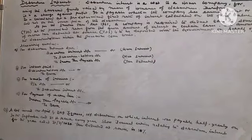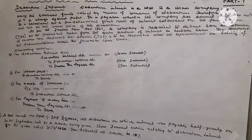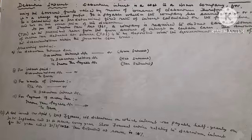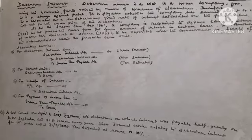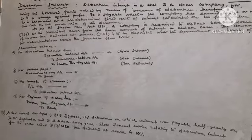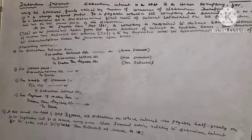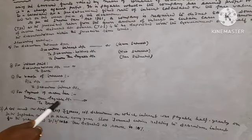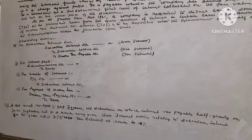For Interest Paid: Debenture Holder Account Debit to Bank. For Transfer of Interest: P&L Account Debit to Debenture Interest Account. For Payment of Income Tax: Income Tax Payable Account Debit to Bank.